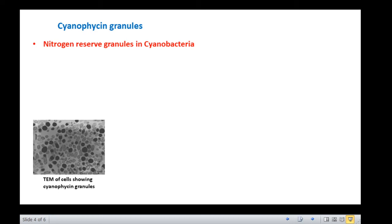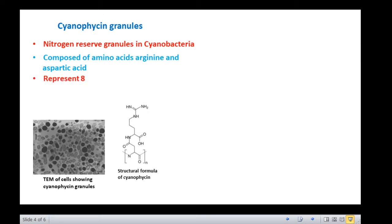Yet another storage granules are cyanophycine granules. Many of the cyanobacteria accumulate nitrogen reserve granules called cyanophycine granules. These are composed of large polypeptides containing the amino acids arginine and aspartic acid and represent 8% of cellular dry weight. These granules are not membrane bound. Cyanophycine granules are produced when the culture approaches stationary phase and are rapidly degraded when growth is re-initiated. Bacteria accumulate cyanophycine as storage compound for nitrogen, carbon and energy when growth is limited by another nutrient.